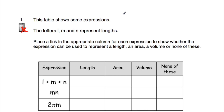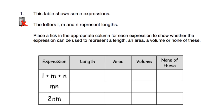So question number one. This table shows some expressions. We've got L plus M plus N, MN, and 2πM. The letters L, M, and N represent lengths, and we've been asked to tick an appropriate column for each expression to show whether it represents a length, an area, a volume, or none of those. Starting with L plus M plus N: if you add a length to a length, you get a bigger length. So L plus M plus N is a length.